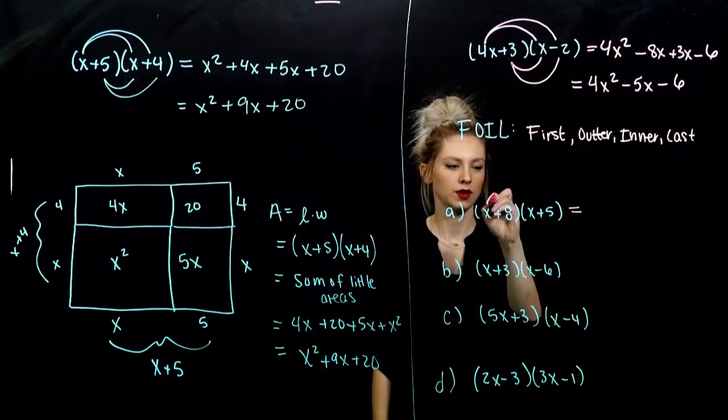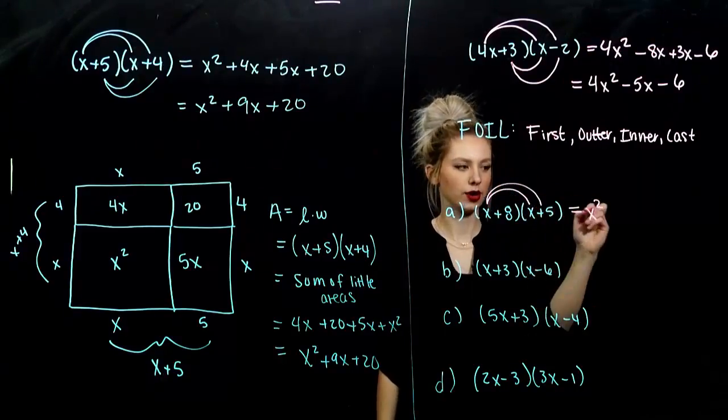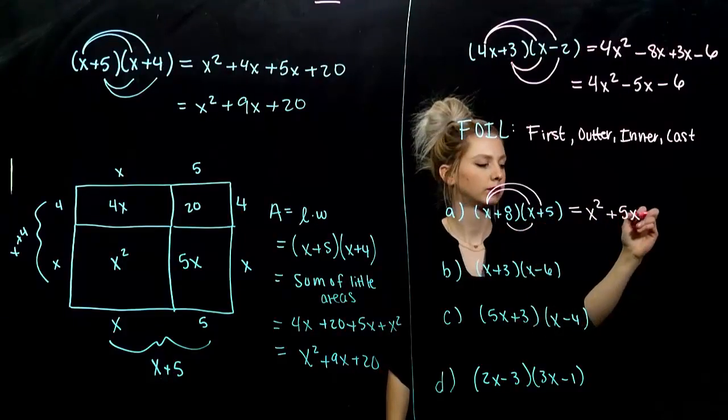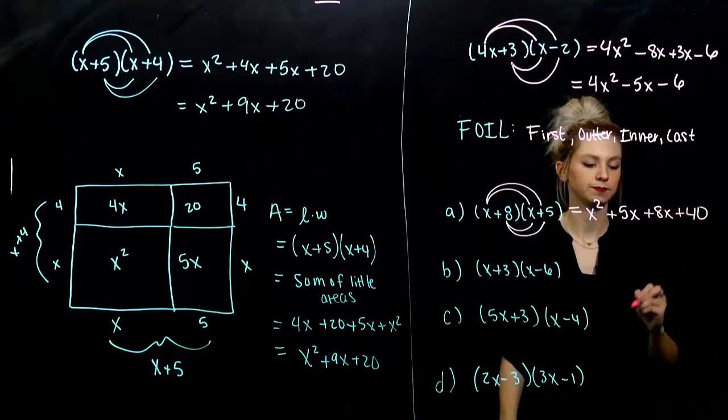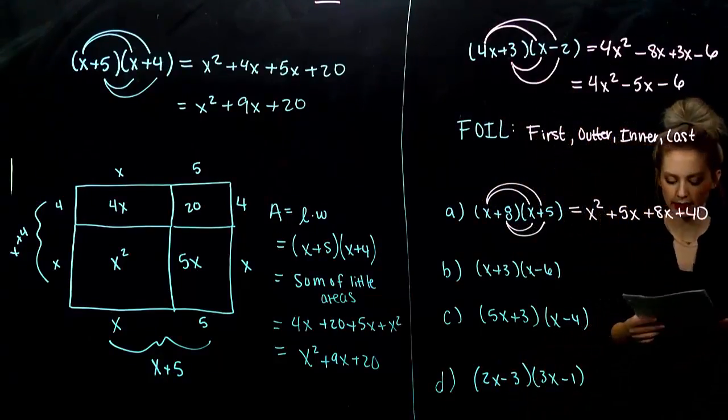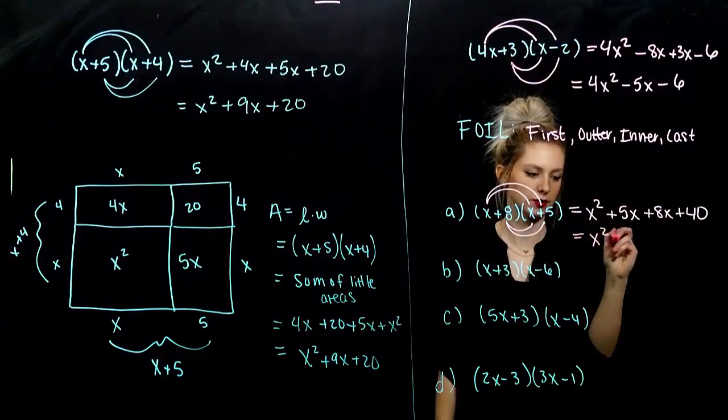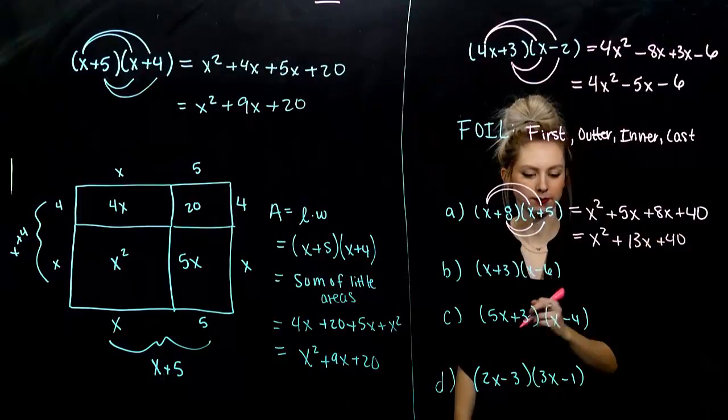And, the first one. First term will give me x squared. Outer, 5x. Inner, 8x. And, last, 40. But, we want to combine like terms. So, how many do I have in the middle? And, write it in descending order. X squared, 13x plus 40. Done.